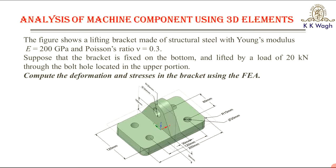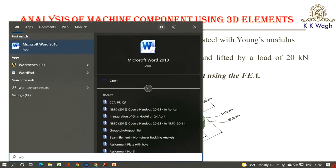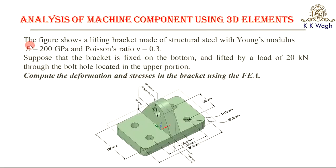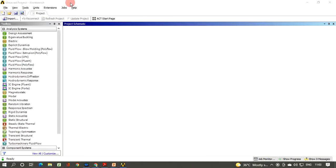To start ANSYS Workbench, press the Start key and type 'workbench'. You will get Workbench 19.1 — click on it and it will load within a few seconds. You will then get the ANSYS Workbench window on your screen with the project schematic displayed.